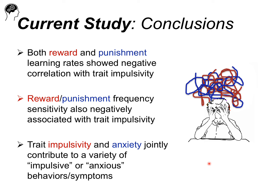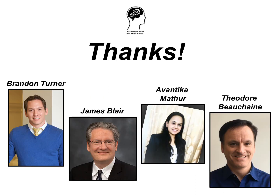In conclusion, both reward and punishment learning rates were negatively related to trait impulsivity, as predicted by Dynamic Developmental Theory, and this provides a future direction for understanding why people prefer immediate over delayed rewards. Reward and punishment frequency sensitivity was also negatively associated with trait impulsivity — an unexpected finding to explore further. Finally, trait impulsivity and anxiety jointly contribute to a variety of observable impulsive and anxious behaviors and symptoms. Thanks for coming, and I look forward to any questions.